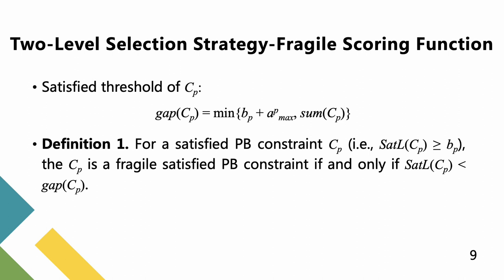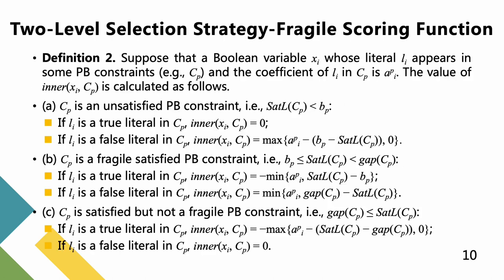On the one hand, if a satisfied PB constraint Cp is fragile, we think that flipping any variable in this PB constraint would probably make this constraint become unsatisfied. On the other hand, if a satisfied PB constraint is not fragile, we think that this PB constraint is solid, which means that flipping any true literal in Cp would not make Cp become unsatisfied with high probability.